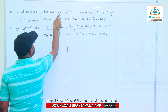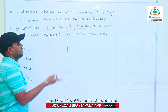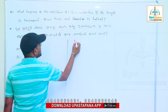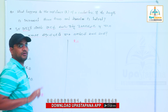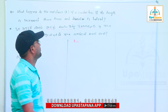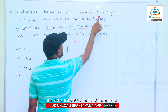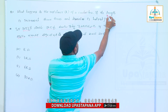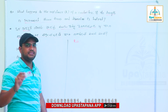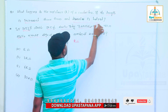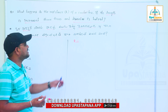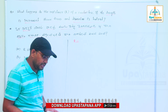What happens to the resistance R of a conductor? The conductor has an original resistance. R is the resistance of a conductor. If its length is increased three times and diameter is half, what is the resistance R? This is the question.